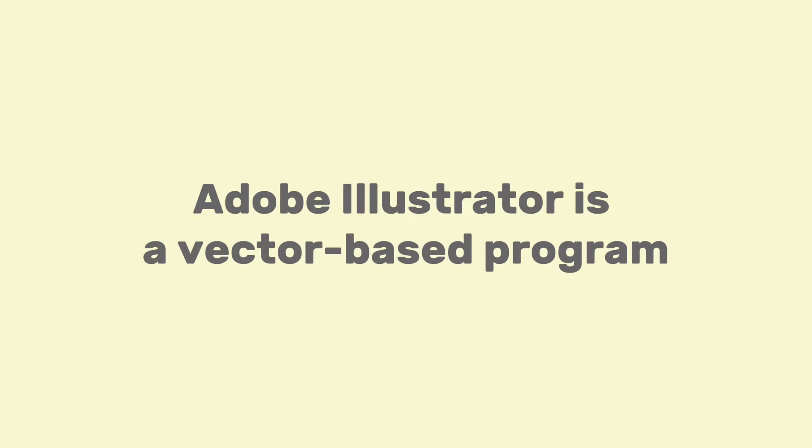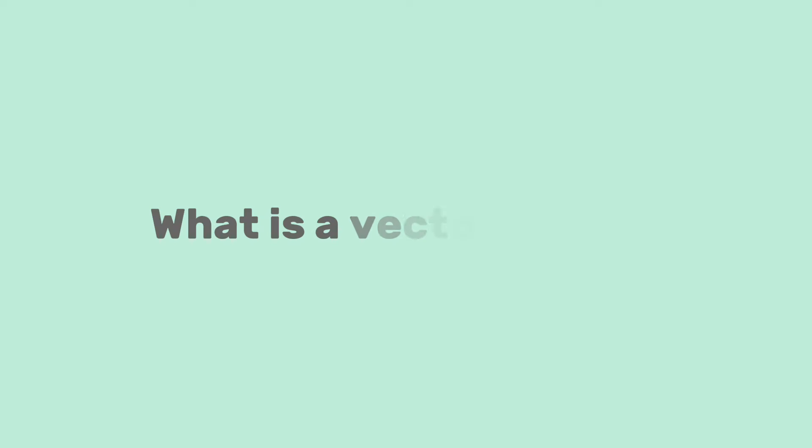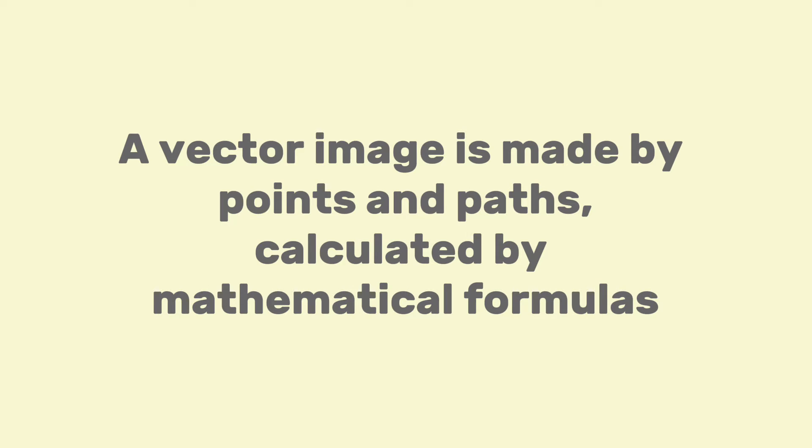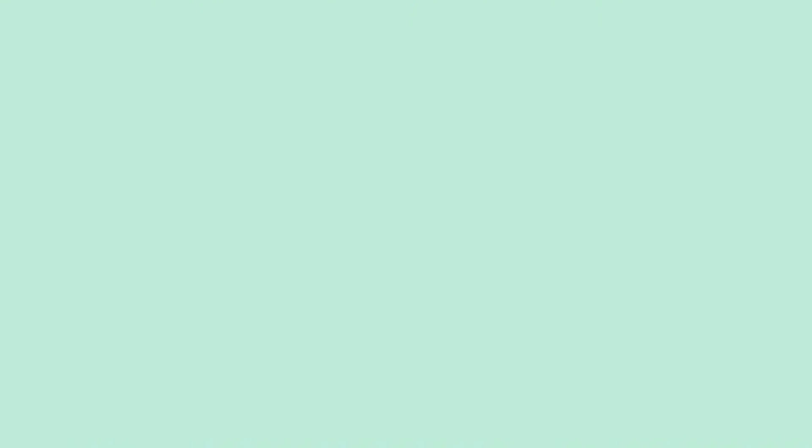Adobe Illustrator is a vector-based program, so what exactly is a vector image? I know there are a lot of official answers, but I'm going to make it easier to understand. A vector image is basically made by points and paths, so they are usually simpler than a raster image.